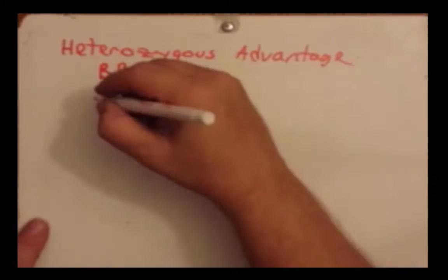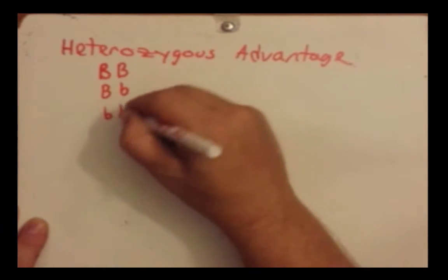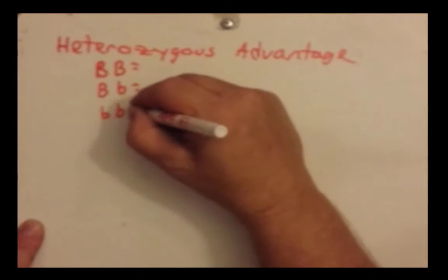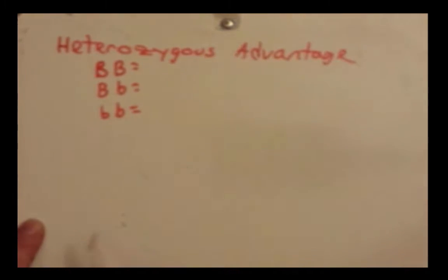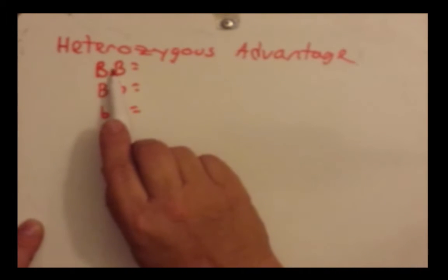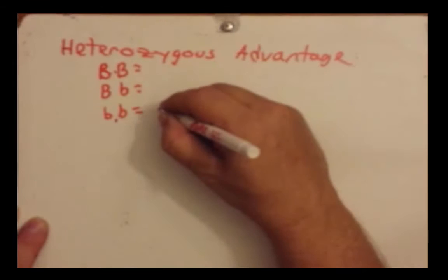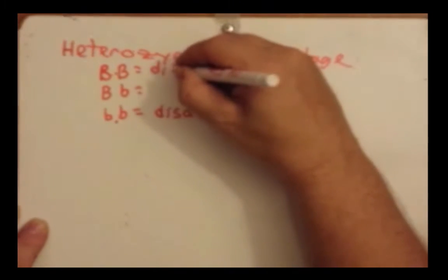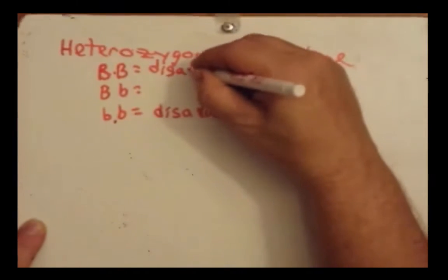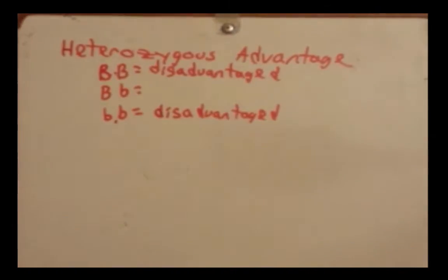Using B to represent the beta subunit of hemoglobin: in cases of heterozygous advantage, both the homozygous dominant (BB) and the homozygous recessive (bb) are disadvantaged in one way or another. In evolutionary terms, being disadvantaged means they are not going to produce as many progeny — they have a lower reproductive success. However, as a heterozygote (Bb), they have an advantage.